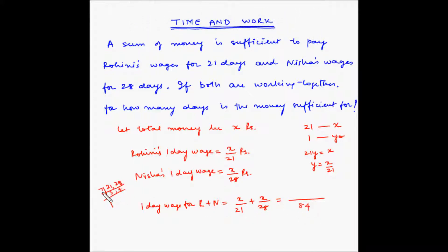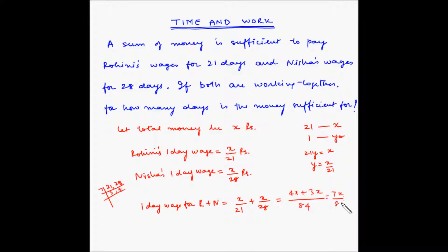21, which was 7 multiplied by 3, goes 4 times into 84. So this becomes 4X. And 28, which was 7 multiplied by 4, goes 3 times into 84. So that gives 3X. So the combined expression is 7X by 84.